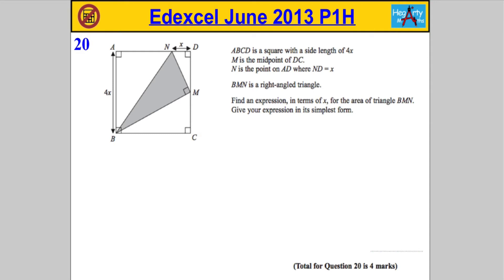Question 20: ABCD is a square with a side length of 4x. M is the midpoint of DC. N is the point on AD where ND equals x. BMN is a right angle triangle. We're asked to find an expression in terms of x for the area of triangle BMN, giving our answer in its simplest form.